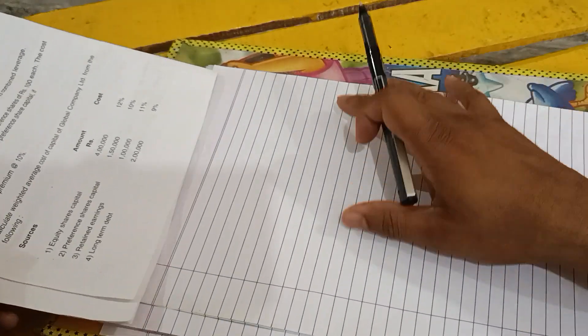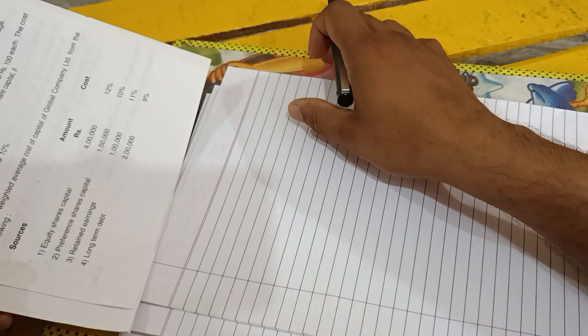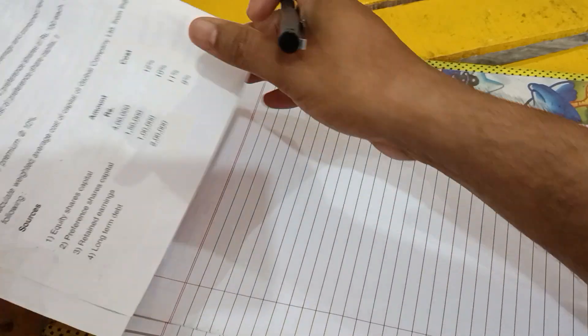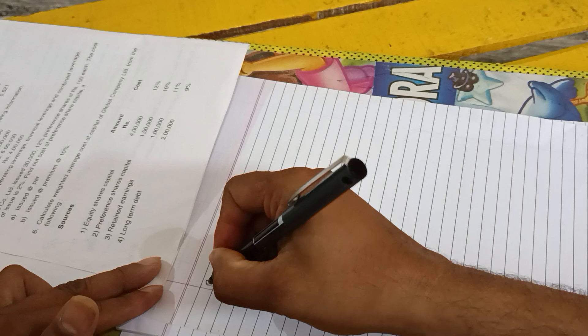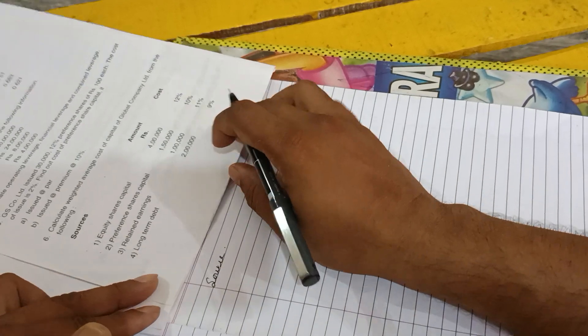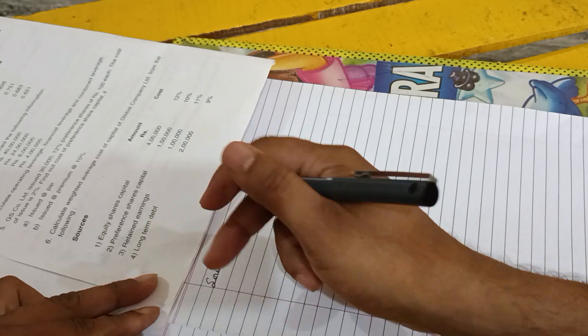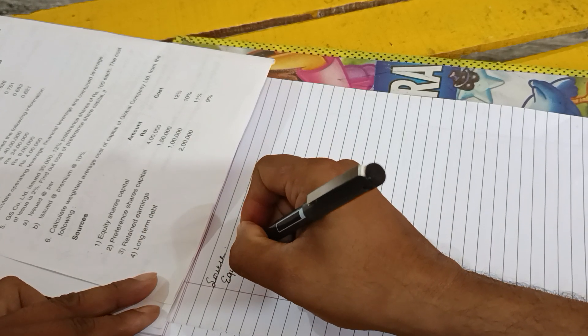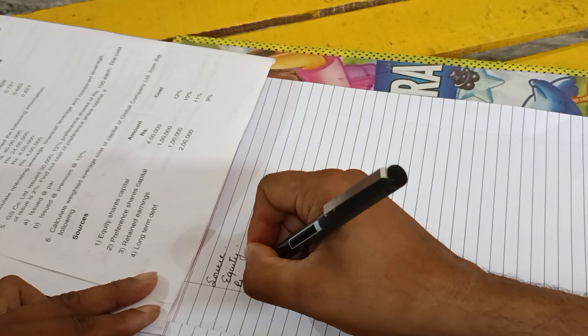So the first thing is simple: we should write all these three columns as they have given in the question. The first column is Source. In Source they have equity, preference, retained earnings, and long-term debt.